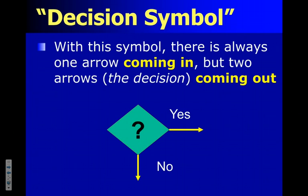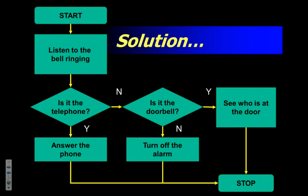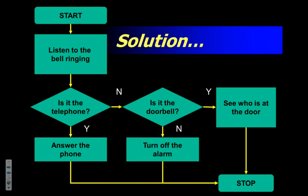Let's talk about the decision symbol specifically. It's always drawn with one arrow in and two arrows out. You might be tempted to have many arrows coming out — like if you asked 'pick your favorite color' with 20 options. In general problem solving that's okay, but in computer science you want one arrow in and two arrows out. That's why in the previous example I used two separate decisions rather than one with three branches. The reason is this translates into coding much better.